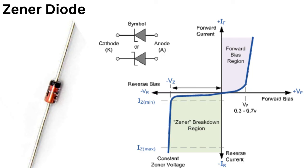The symbol for a Zener diode is the same as a regular diode, with the addition of a small Z or VZ, indicating the diode's voltage rating.